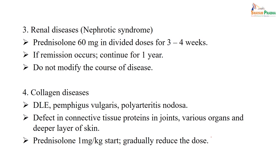Other non-endocrine uses include renal disease: in nephrotic syndrome, give immunosuppression with prednisolone 60 mg in divided dose for 3 to 4 weeks; if remission occurs, continue for 1 year. It will not modify the course of disease — only immunosuppressive. In collagen diseases like lupus, pemphigus vulgaris, or polyarteritis nodosa — where there is a defect of connective tissue, protein in joints and various organs, and multi-organ involvement — use prednisolone 1 mg/kg to start, gradually reducing the dose.